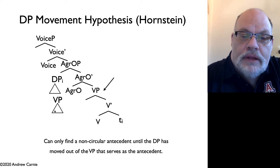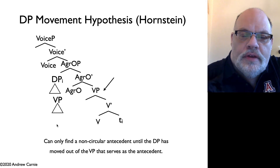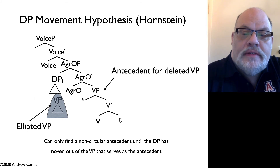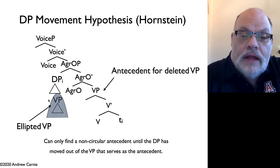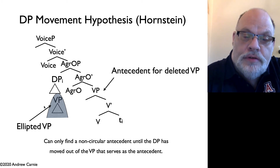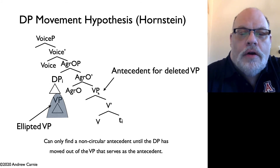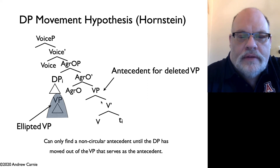This movement is completely motivated because antecedent-contained deletion only happens when you have a DP with a verb phrase inside of it. Once you do this movement, notice that what you effectively have is the antecedent for the deleted verb phrase no longer contains the elided VP itself — the elided VP has moved outside of it. So this VP, the one that's elided, can look around the tree and find its antecedent, and you don't get the circularity that you would normally get in antecedent-contained deletion structures.